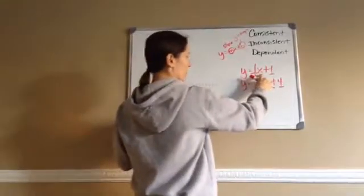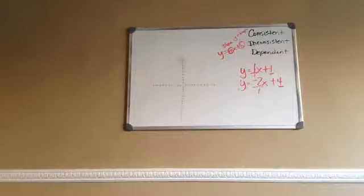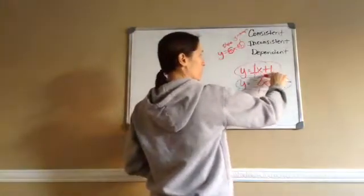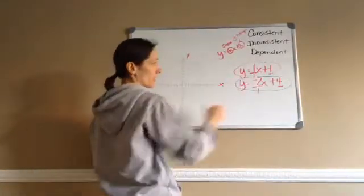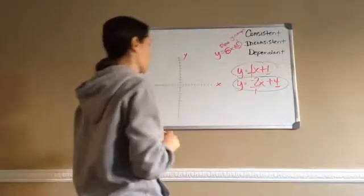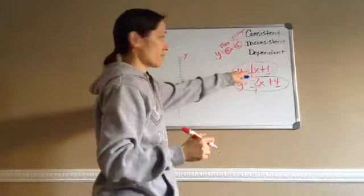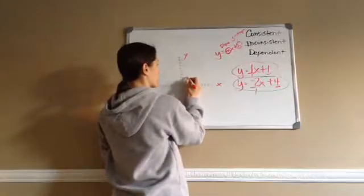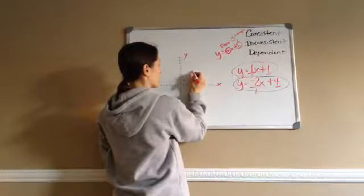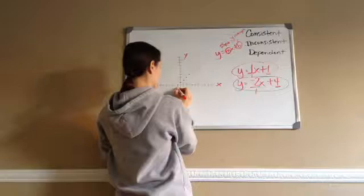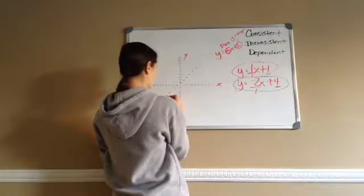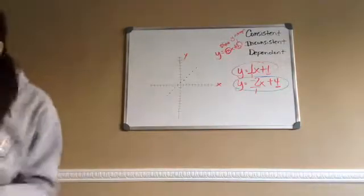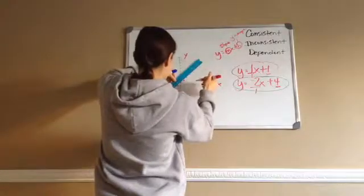I'm going to graph both equations — I'll do one in blue and one in red. For y equals x plus 1, I put a dot on the y-intercept at 1, then rise 1, run 1 repeatedly in both directions to build the line. Then for y equals negative 2x plus 4, I place a dot at 4 on the y-axis, then fall 2, run 1 repeatedly to build that line.